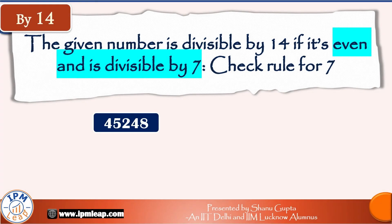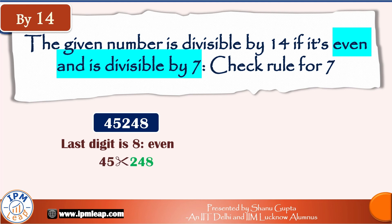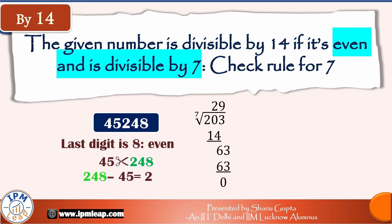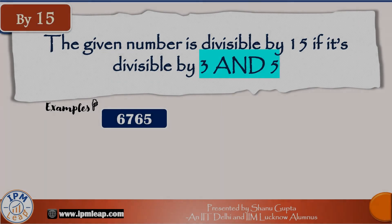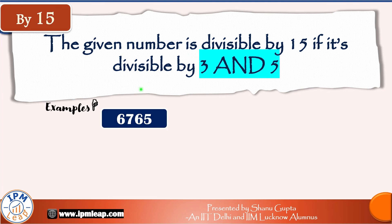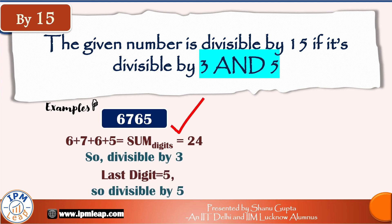For 14, being a composite number (2 × 7), we check divisibility by both 2 and 7. For 45248: it's even so divisible by 2; splitting at the last three digits gives 45 and 248; 248 − 45 = 203, which is divisible by 7. Since 45248 is divisible by both 2 and 7, it's divisible by 14. For 15 (= 3 × 5): for 6765, digit sum is 24 so divisible by 3, and last digit is 5 so divisible by 5 — therefore 6765 is divisible by 15.